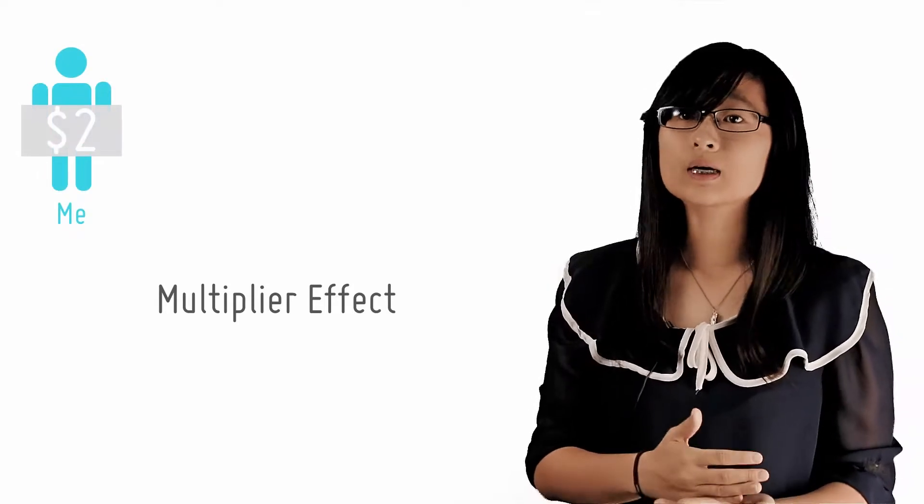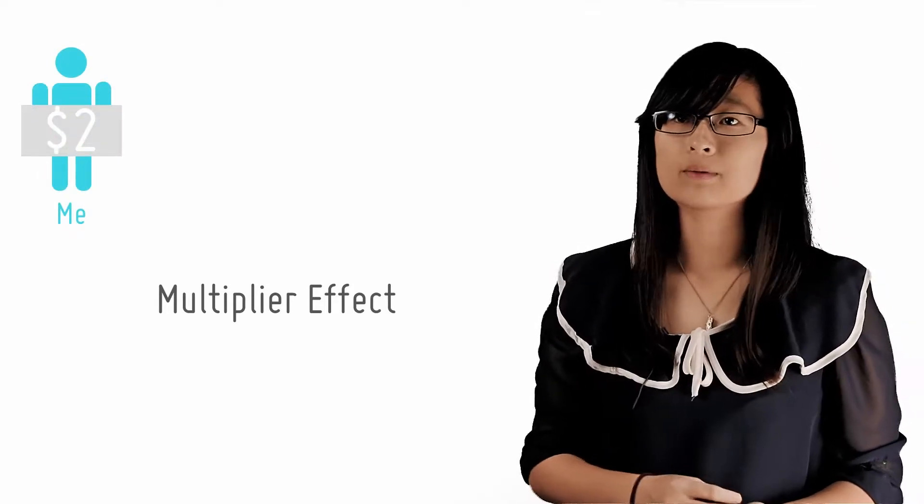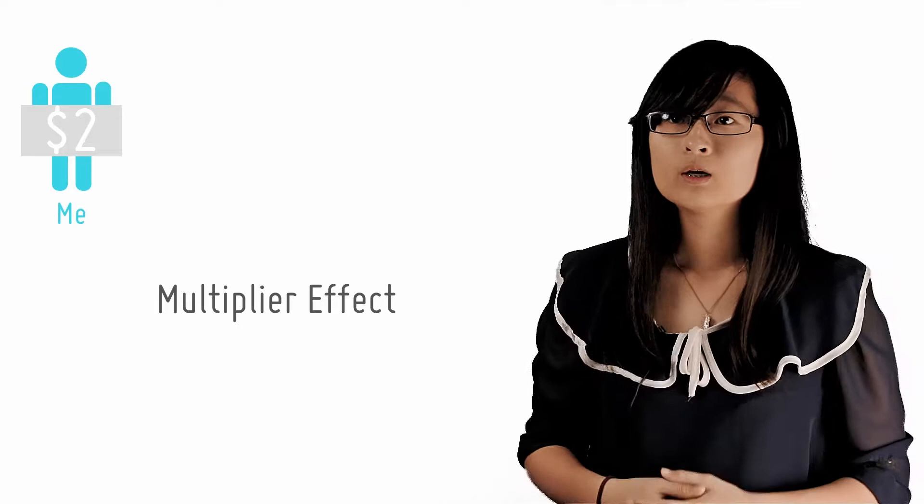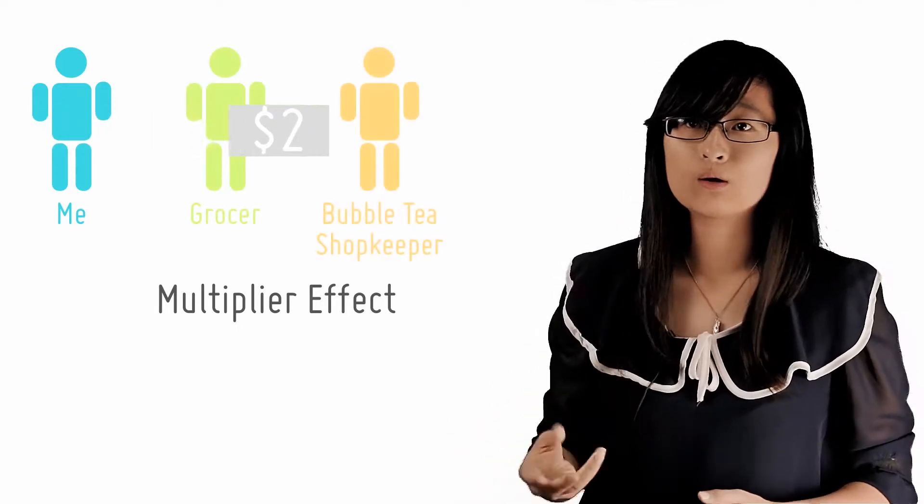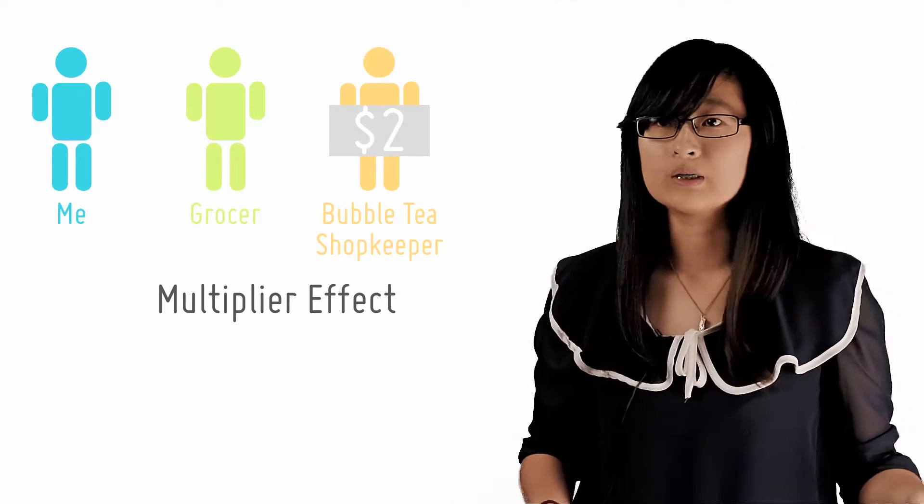The multiplier effect occurs when one person's spending becomes another person's income. So let's say I pay a grocer two dollars for some apples. The grocer now, two dollars richer, uses that money to buy some bubble tea.